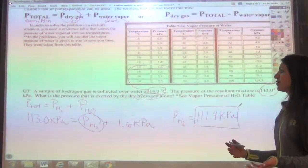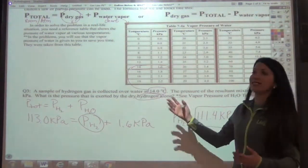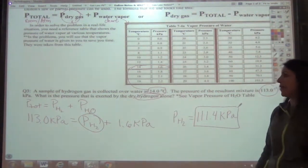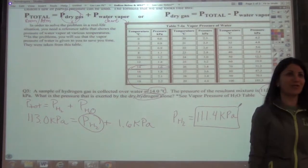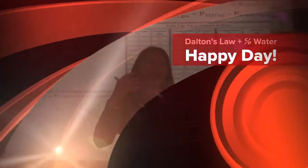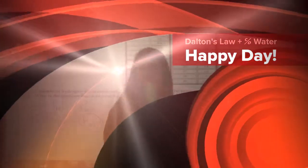Okay. So depending on what the type of problem is, if it tells you that it's collecting over water, just make sure that you come back and you take a look at the chart to figure out what that water vapor pressure is at that temperature. And that's it for Dalton's Law of Partial Pressure.